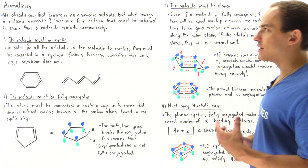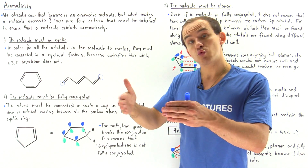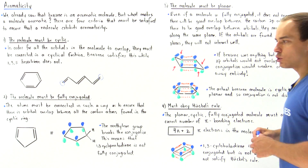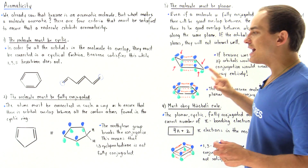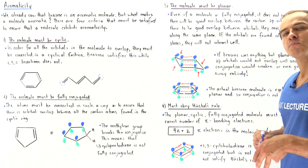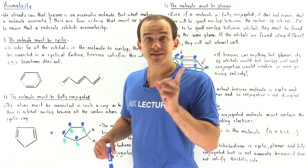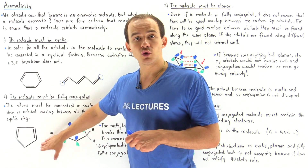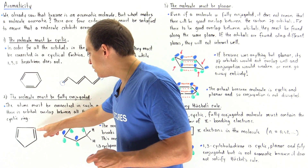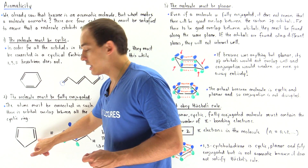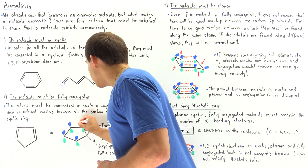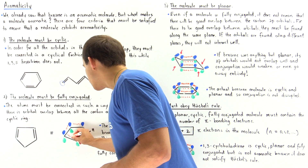The second criterion states that the molecule, on top of being a ring structure, must be fully conjugated. The atoms must be connected such that there is complete orbital overlap between all the carbon atoms inside our cyclic molecule. One example of a molecule that does not satisfy this criterion is 1,3-cyclopentadiene. Basically, we have overlap between four orbitals — this orbital, this orbital, this orbital, and this orbital have good overlap, showing very good interaction between these four carbons.